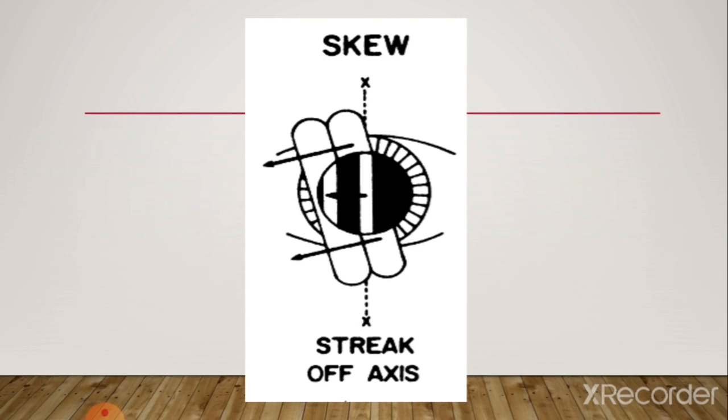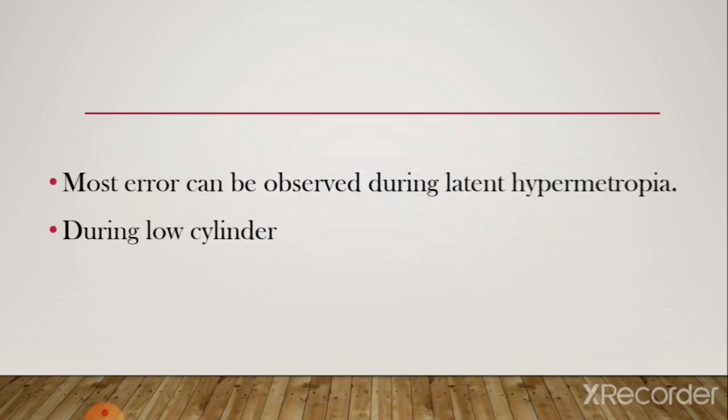In skew phenomena, a break is observed along with width movement that is not aligned, indicating you need to correct your axis before correcting the refractive error. Most errors can occur during latent hypermetropia, where you need to fog the patient first, then defog to reach the neutral point. For low cylinder power, if you prefer plus cylinder go for more minus and least plus; if you prefer minus cylinder go for more plus and least minus. Neutralize the more plus meridian first, and the opposite meridian will convert to against movement which you can then correct.